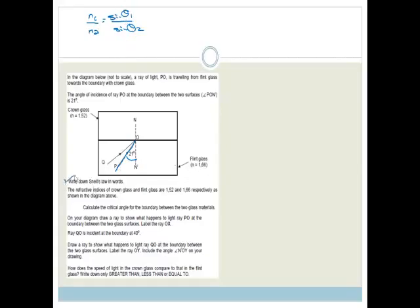The refractive indices of crown glass and flint glass they've given us are 1.52 and 1.66. It says calculate the critical angle for the boundary between the two glass materials.